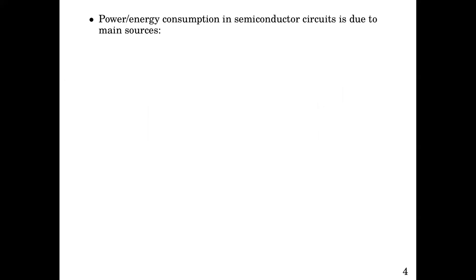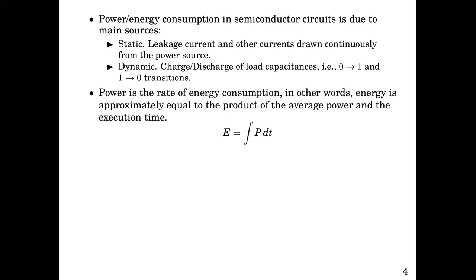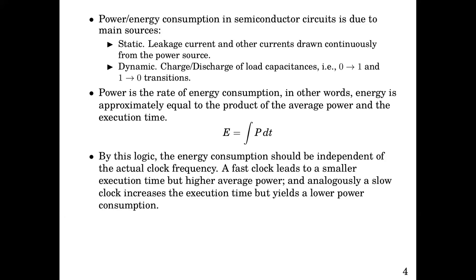Power/energy consumption in semiconductor circuits is due to two main sources: Static, this is leakage current and other currents drawn continuously from the power source, and Dynamic, charge and discharge of load capacitances, i.e. 0 to 1 and 1 to 0 transitions. Power is the rate of energy consumption. In other words, energy is approximately equal to the product of the average power and the execution time, which is simply the time integral over the power. By this logic, the energy consumption should be independent of the actual clock frequency. A fast clock leads to a smaller execution time but higher average power, and analogously, a slow clock increases the execution time but yields a lower power consumption.